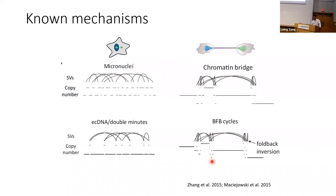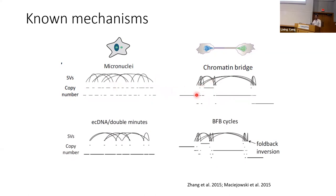All of these are experimentally proven, but they produce complex rearrangements with different patterns. In micronuclei, breakpoints are usually randomly distributed across the chromosome. In chromatin bridge, DNA fragments break due to mechanical forces, so there are hotspots. Depending on how many chromosome copies are involved, you get either two or three copy states. After multiple BFB cycles, you may have more than two or three copies.